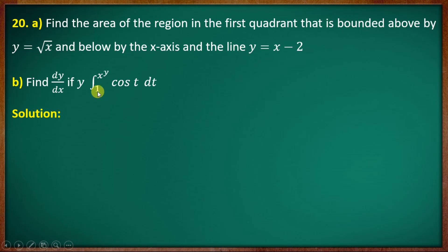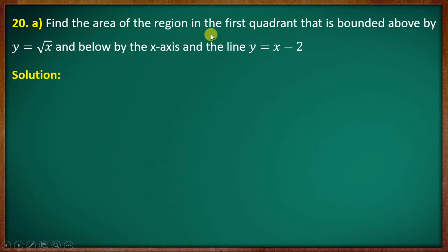The second question will be: find dy by dx if y is equal to the integral from 1 to x raised to y of cos dt. I will discuss the first question — find the area of the region in the first quadrant bounded above by y equal to root x and below by the x-axis and the line y equal to x minus 2.